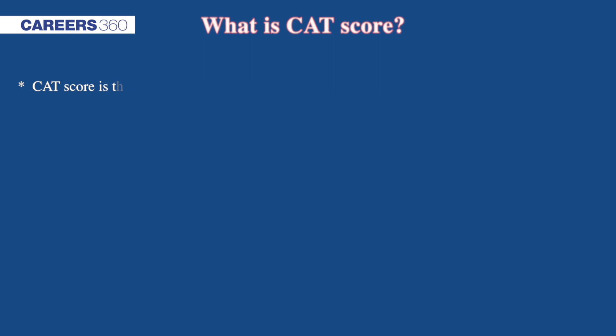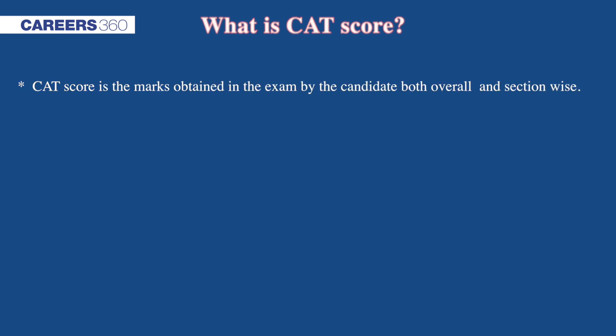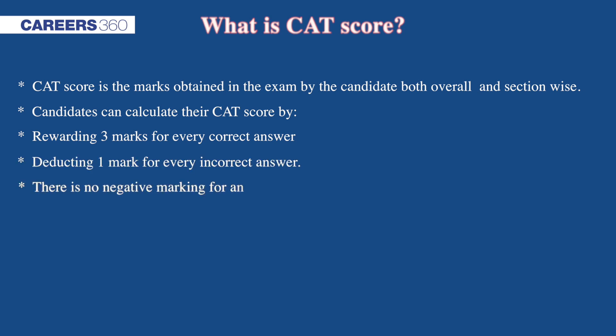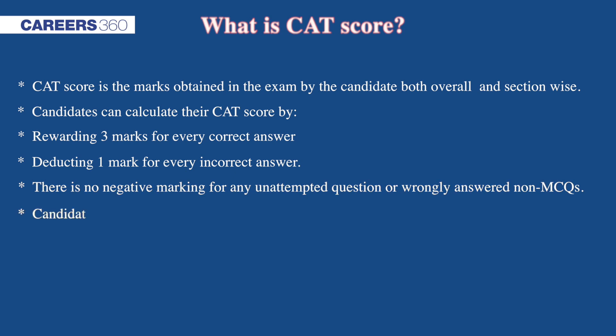What is CAT score? CAT score is the marks obtained in the exam by the candidate, both overall and section-wise. Candidates can calculate the CAT score by rewarding three marks for every correct answer and deducting one mark for every incorrect answer. There is no negative marking for any unattempted question or wrongly answered non-MCQs. Candidates can calculate the CAT score out of 300 marks.